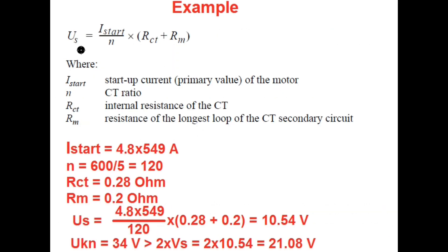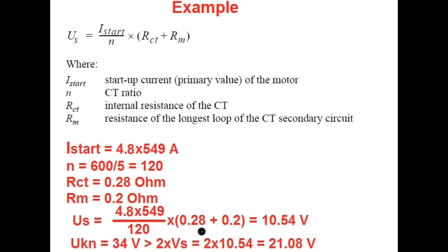Calculating the stabilizing voltage: Us = (Istart / n) × (RCT + Rm). Here RCT = 0.28 Ω and Rm = 0.2 Ω. Starting current = 4.8 × 549 A, CT ratio n = 600/5 = 120. So Us = (4.8 × 549 / 120) × (0.28 + 0.2) = 10.54 V.